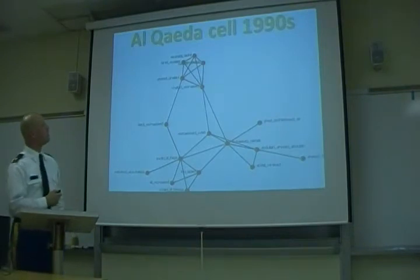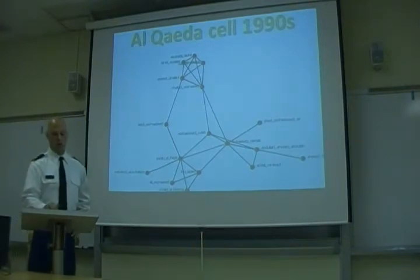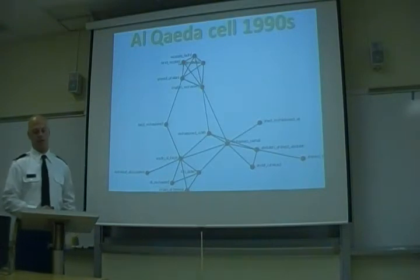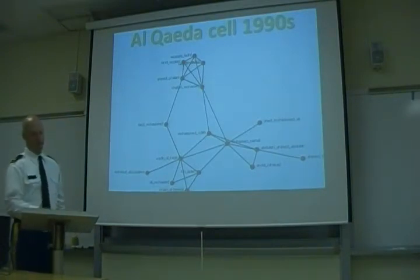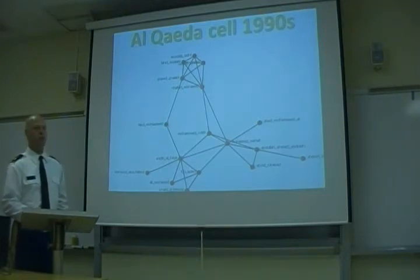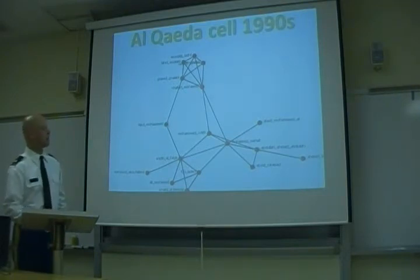In this example, we see an actual organization of an al-Qaeda terrorist cell from the late 1990s. Because of the complex structure of this network, terrorists can easily replace most of their leaders after a leadership strike.